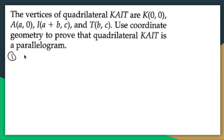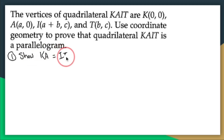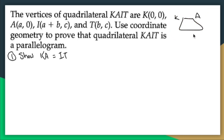Number one, I have to show that KA is congruent to IT. Then I have to show that AI and KT are congruent. Looking at the picture — KAIT — I have to show KA and IT, and then AI and KT.